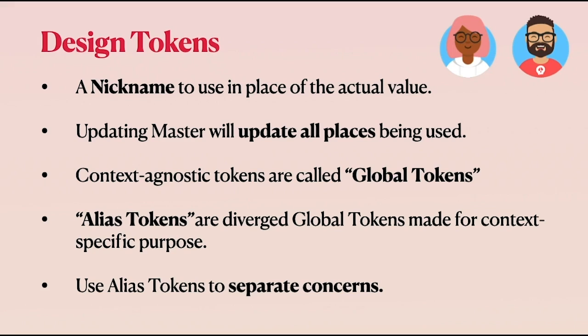We learned that we want to actively use alias tokens to separate concerns. What we don't want to do is link everything to a single token — that will tie too many contexts together into one, and any update will become more and more risky. Instead, we want to separate the concerns and modulate as much as possible between the components. That's it for design tokens — I hope you have a better understanding. If you have any feedback or comments, please post below. Happy designing!